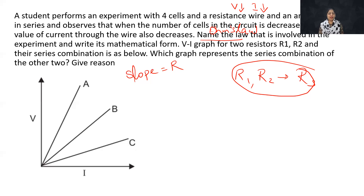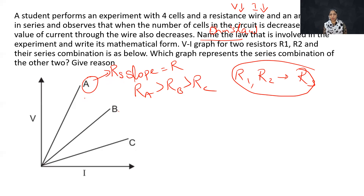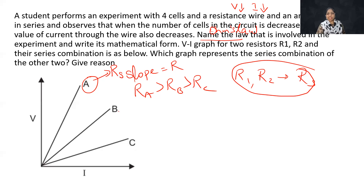Slope of V-I graph is equal to resistance, higher the slope, higher the resistance. The value of resistance: R-A is greater than R-B, which is greater than R-C. In a series combination, when two resistors are connected in series, effective resistance will be the highest. So the graph with the highest slope — Graph A — represents the series combination. R-A is the series combination of R1 and R2, and Graph A represents series.